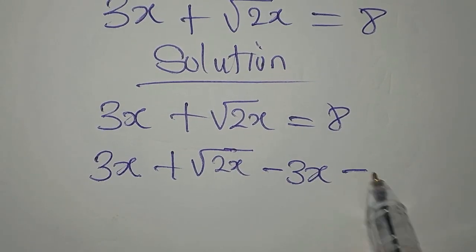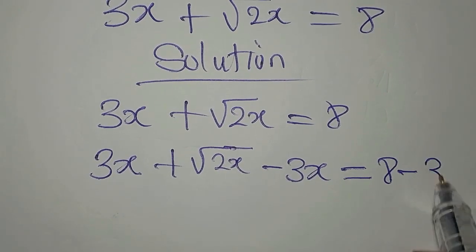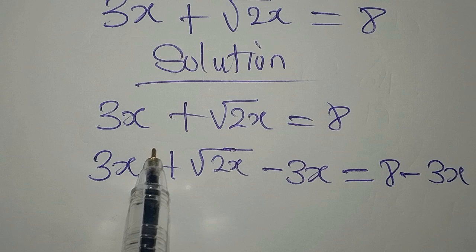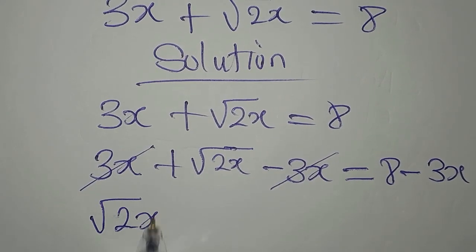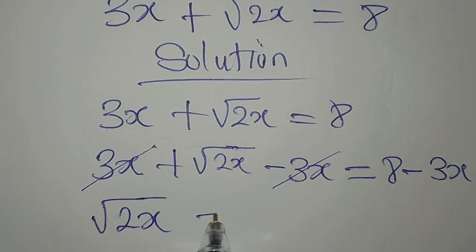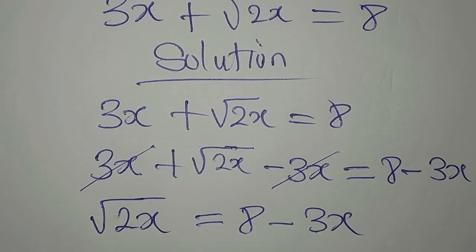On the other hand, we have 8 minus 3x, so these terms cancel. We now have square root of 2x equals 8 minus 3x.